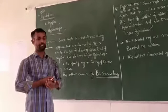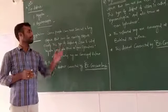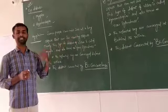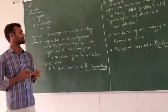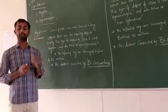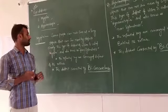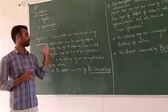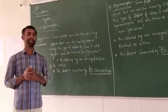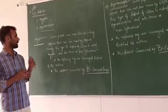What is myopia? Myopia means some people cannot see distant objects but can see nearby objects clearly. This type of defect of vision is called myopia. This eye defect is myopia.